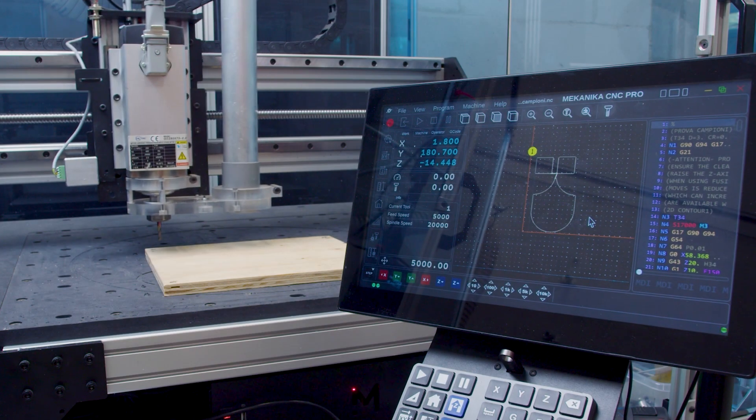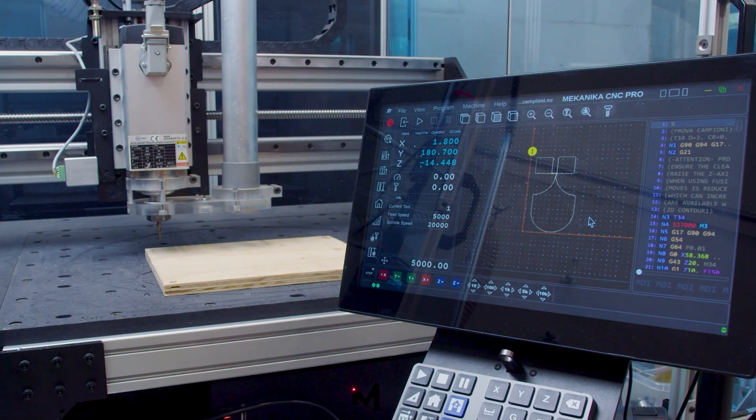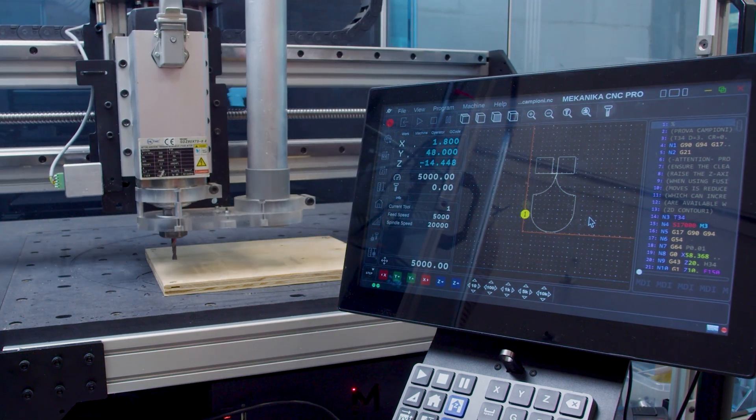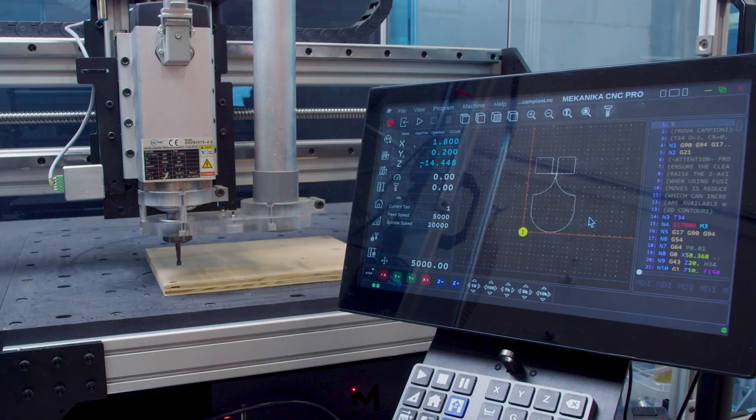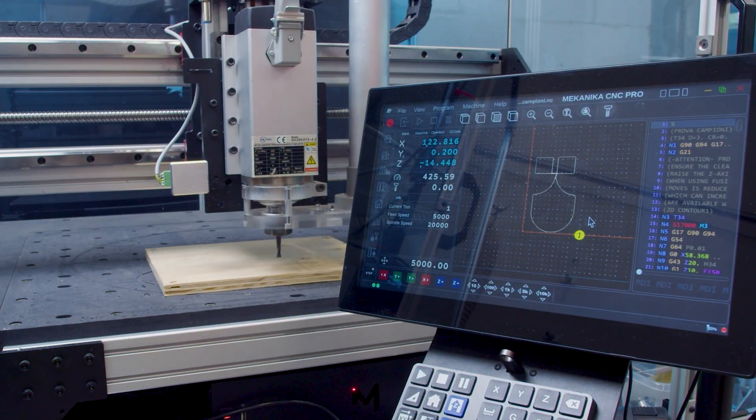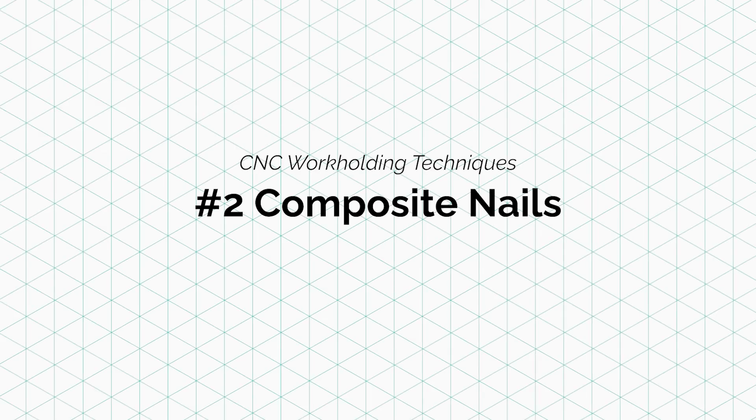The cons are it will quickly damage your spoilboard so you will have to regularly change it or flip it, and you will also have to make sure the tool will never hit the screws in its toolpath, which can sometimes be tedious. If your machine has visual representation of the toolpath like Mekano machines, you can check on the screen the places where it is safe to put the screw.